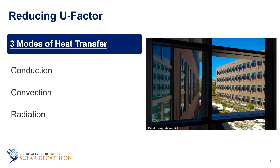When we look at the U-factor for windows, we are looking at heat transfer between our controlled inside environment and the outside. From previous episodes, we know that there are three methods of heat transfer: conduction, convection, and radiation. The way to reduce the U-factor of a window is to tackle each of these methods of heat transfer, starting with conduction.